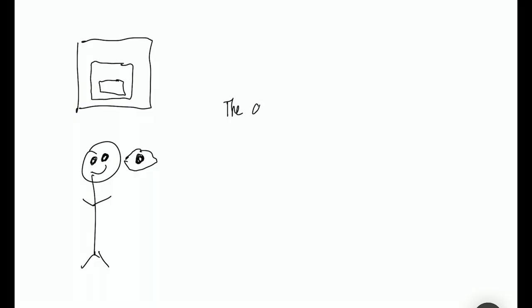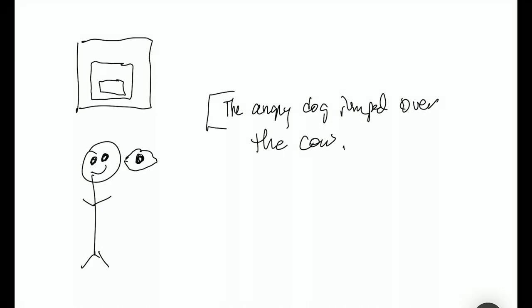That's a great drawing. All right, so let's think of another one. How about a sentence? So you could think about, you know, 'the angry dog jumped over the cow.' So there's the sentence — that's a whole. And you might have certain phrases like 'the angry dog jumped over' and 'the cow.' So those might be parts. And then you have a part inside, like 'dog' is part of this thing.